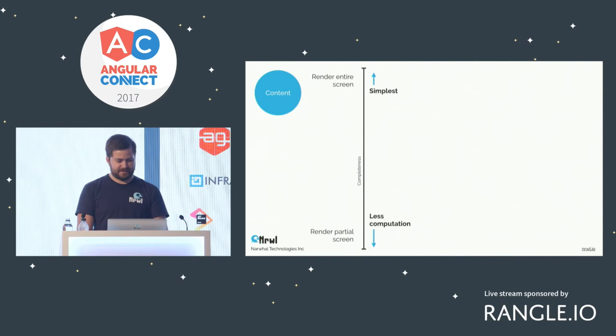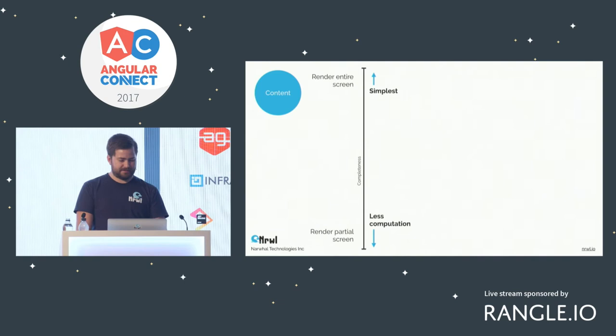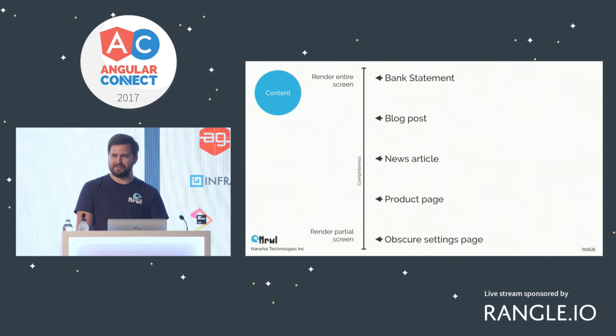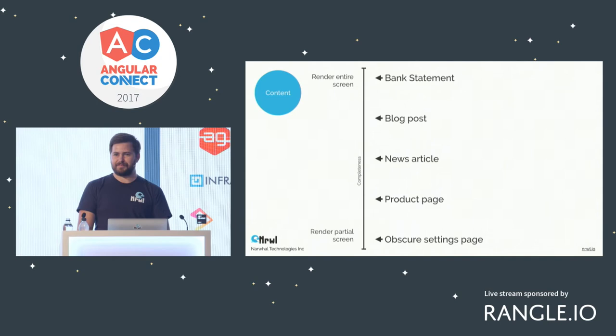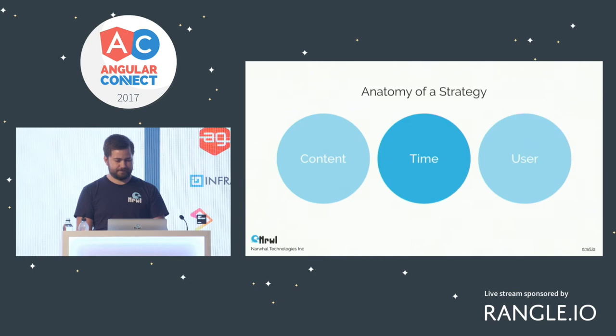If we flip that spectrum and think about simplest at the top: rendering the entire screen is simpler because you don't have to think about what to render, you just render the whole thing. Rendering a partial screen involves less computation, which matters if you're doing it at runtime. Some real-world examples: a bank statement probably needs to be re-rendered each time because you want the exact current account balance. Blog posts may have updates or edits you want to grab on the fly. And a settings page deep in your application probably doesn't even need pre-rendering — you can just serve an app shell since it's not a frequently or directly visited page.